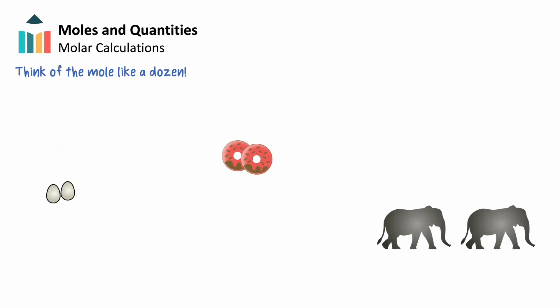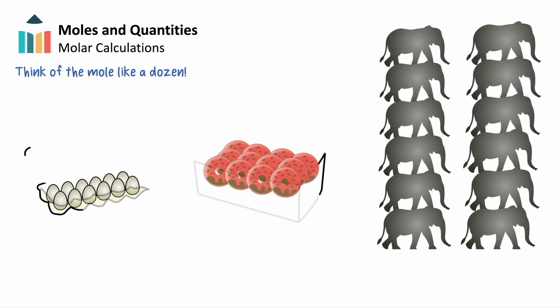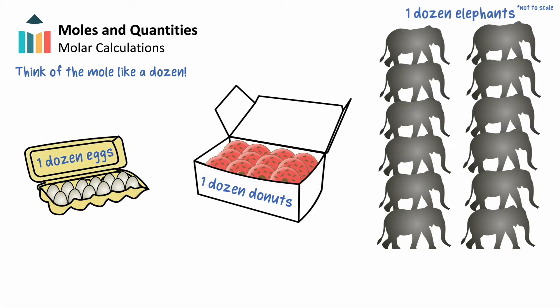Whether it be a dozen eggs, donuts, or elephants, a dozen will always refer to 12 of each.